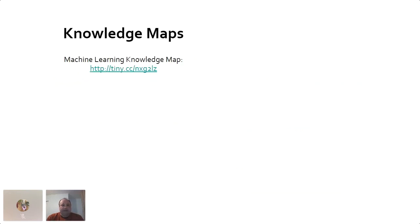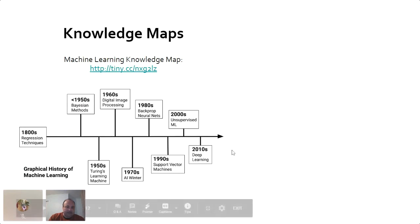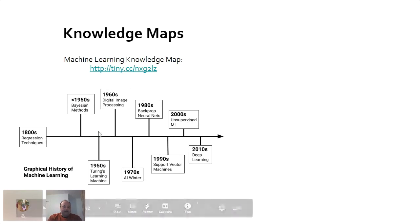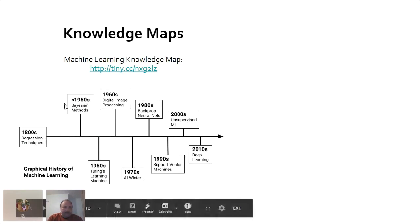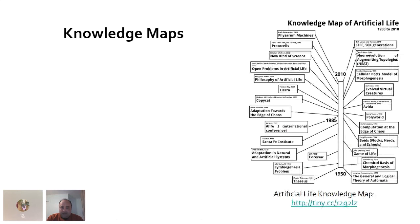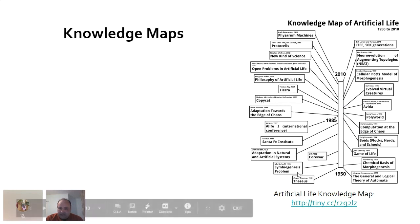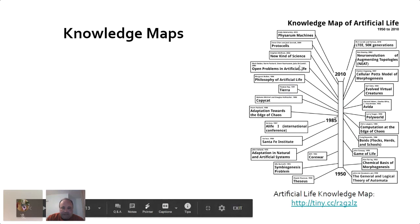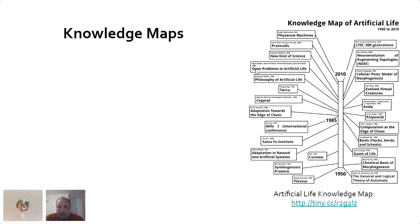This is an example of a knowledge map — a machine learning knowledge map starting in the 1800s, though most events happen in the last 70 years. You can add different categories, events, and people, which makes it dynamic. You can also do something like this in the field of artificial life instead of machine learning — here you have events, people, experiments, and software platforms, which looks quite chaotic but is browsable.